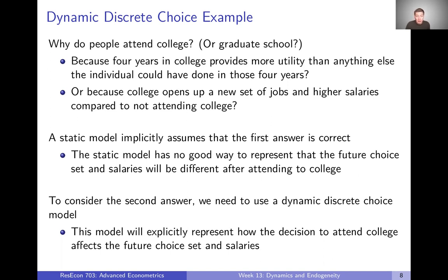A static model is only going to look at the current time period and will implicitly assume that the first answer is correct — that every person going to college must get more utility from college than anything else they could be doing in those four years. It's not going to represent the fact that going to college might change your future choice set, change salaries, or change the quality of job you can get in the future.